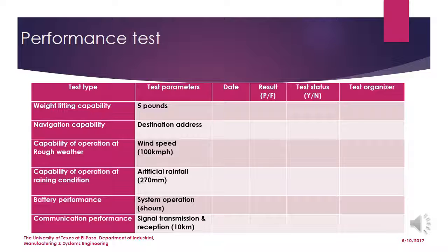The drone must be able to lift at least five pounds. Landing capability will be monitored at the destination address. Artificial wind flow and rainfall will be created to observe performance. Battery and communication performance will be monitored at locations with low signal. If any testing criterion fails, different processes will be implemented. The related subsystem will be monitored and a performance improvement process followed. The system will only be launched for operation when it passes all test criteria.